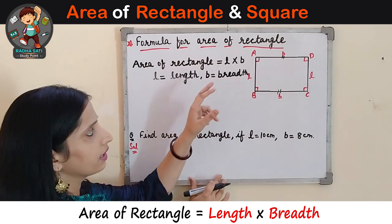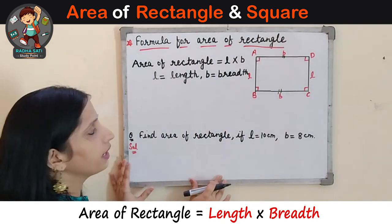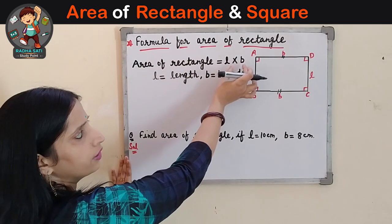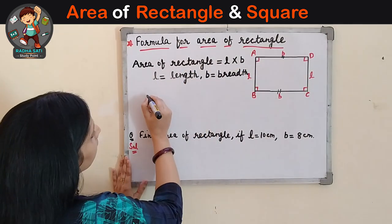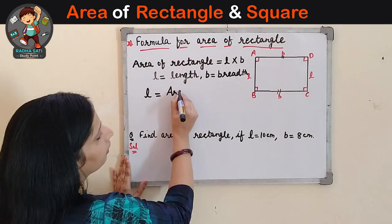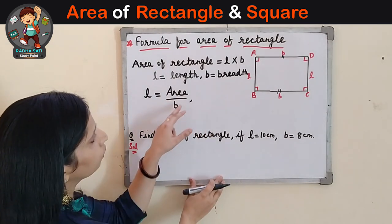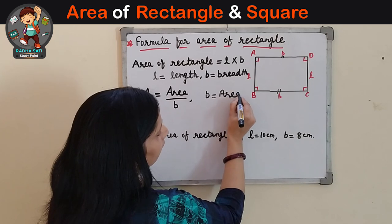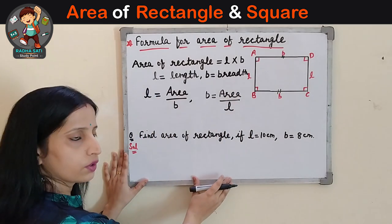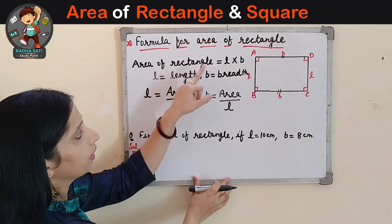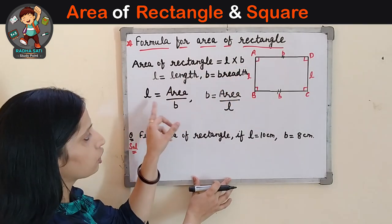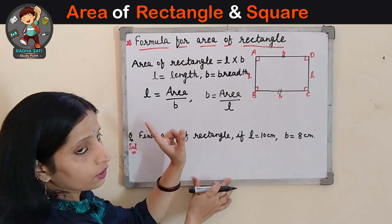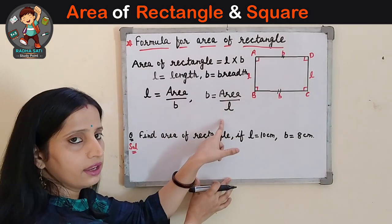If in a rectangle we know the length and the breadth, we can easily find the area by applying the formula L multiplied by B. But if the area is given and we know the breadth, then to find the length we divide the area by breadth. Or if we know the length and have to find the breadth, we divide the area by the length. So there are three formulas: Area = L × B, Length = Area ÷ Breadth, and Breadth = Area ÷ Length.